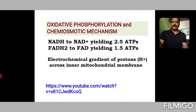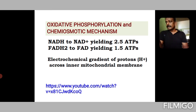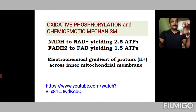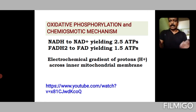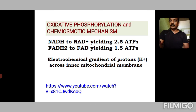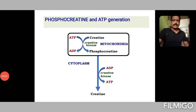You can watch one of my earlier lectures on chemiosmotic mechanism and oxidative phosphorylation using the link given. The advantage of substrate level phosphorylation is that it is used for the instant production of ATP — for example, in red blood cells which do not have mitochondria, or in skeletal muscles during strenuous exercise.